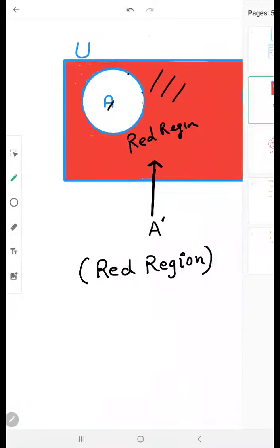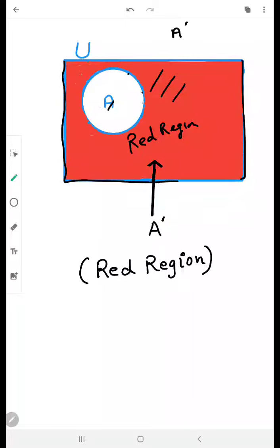So let's start with the one that is A-Complement, the complementary sets. For example, this is our universal set which is represented by this rectangle. And A is a set under this universal set, like A is a proper subset of U.